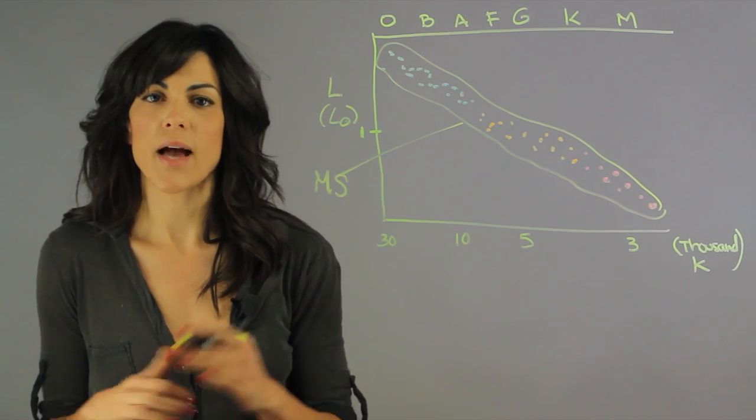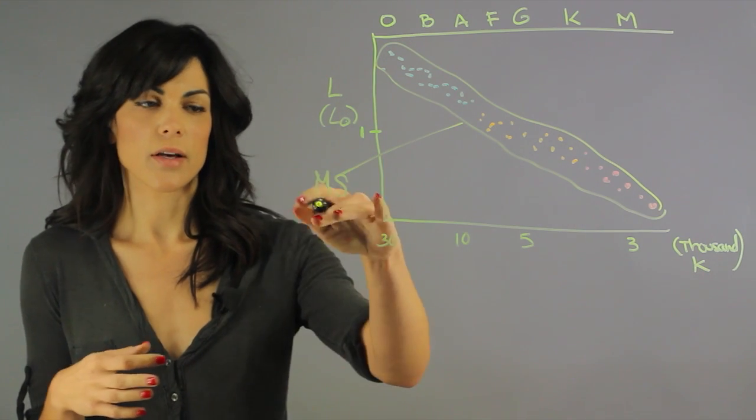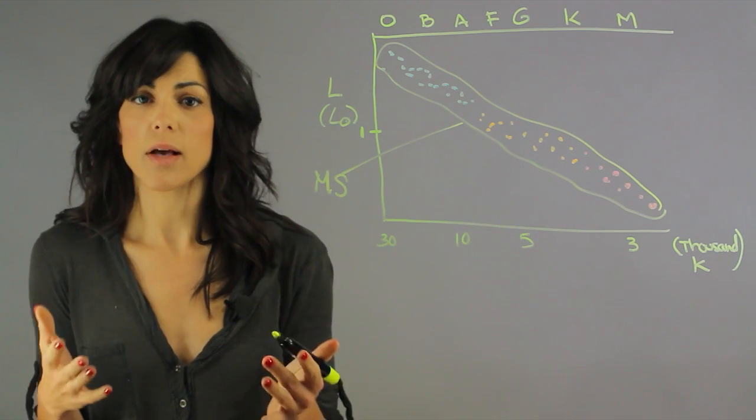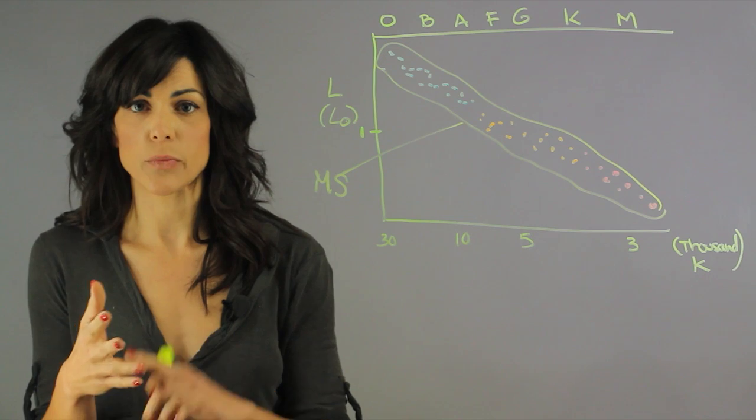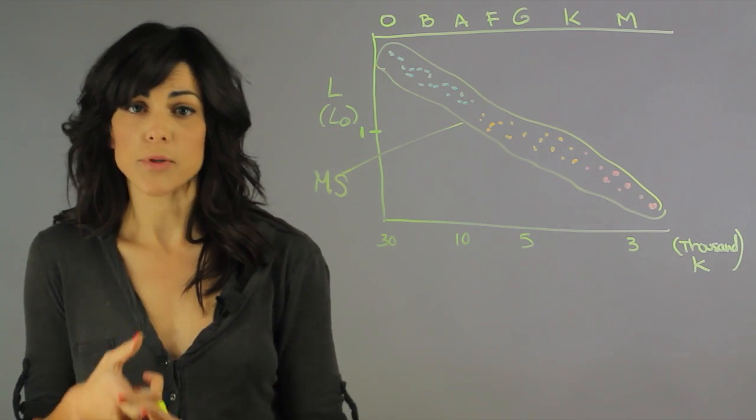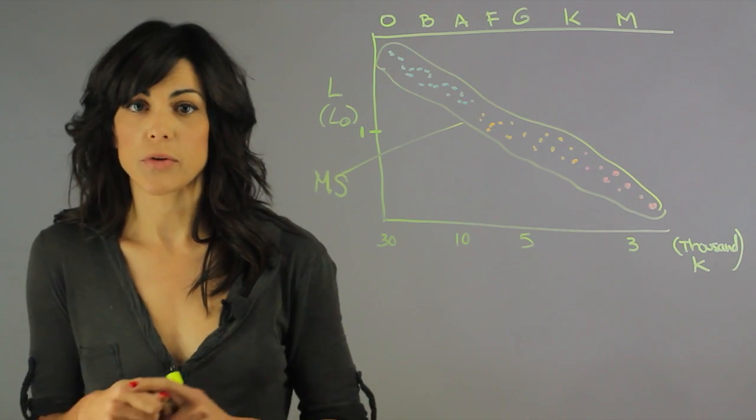Now the axis for this HR diagram can be a lot of things. It can be masses, it can be luminosity, it can be temperature, absolute magnitude, or spectral classes.